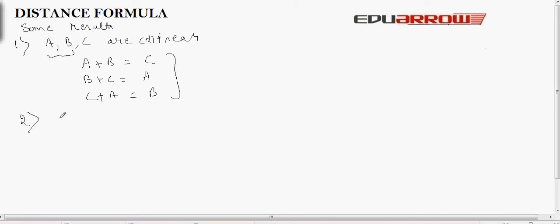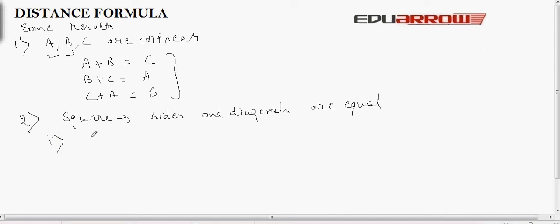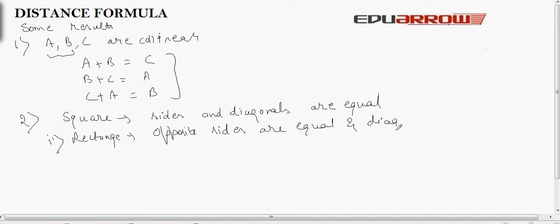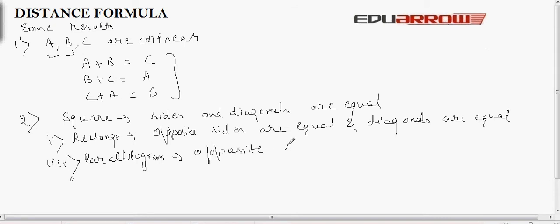Another result: to prove that a given figure is a square, prove that all four sides are equal and the diagonals are also equal. To prove that a figure is a rectangle, prove that opposite sides are equal and the diagonals are equal. To prove that a figure is a parallelogram, prove that opposite sides are equal. In this way, we can identify geometric figures using the properties and the distance formula.